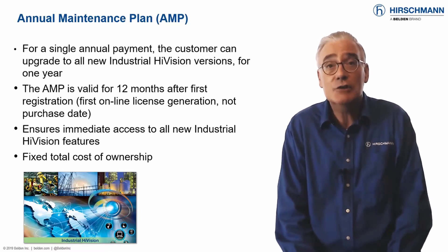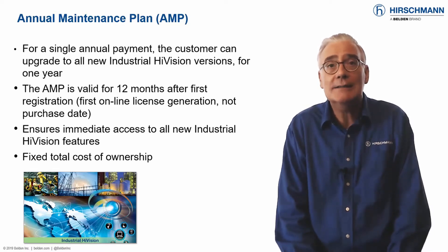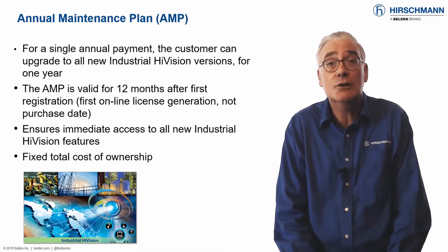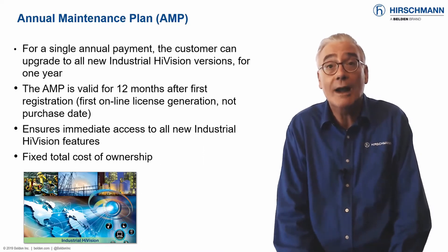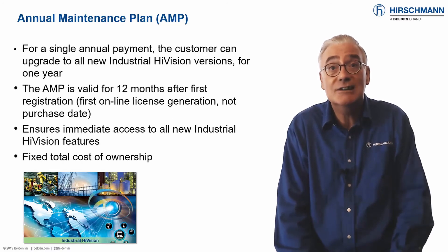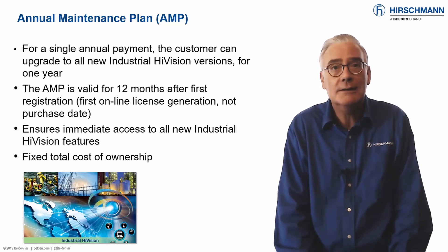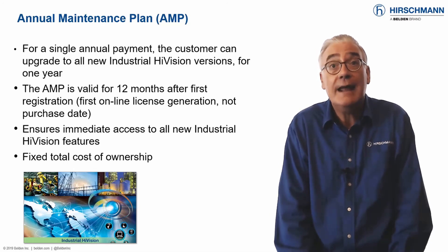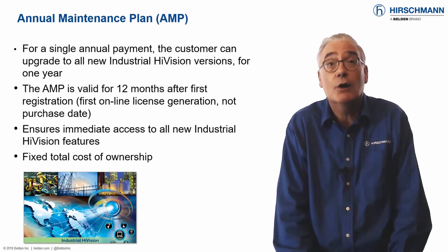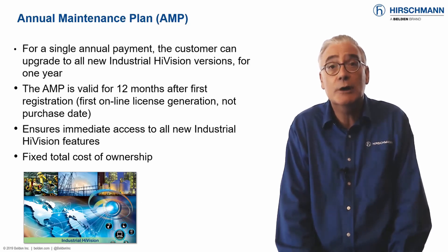An Industrial HiVision annual maintenance plan is available. The AMP gives you access to all new versions of Industrial HiVision for one year. The validity period starts from when you first generate a license with the AMP, not from when you buy it. The cost of the AMP is 20% of the price of a full license. The low annual price ensures a fixed total cost of ownership for the lifetime of your network.